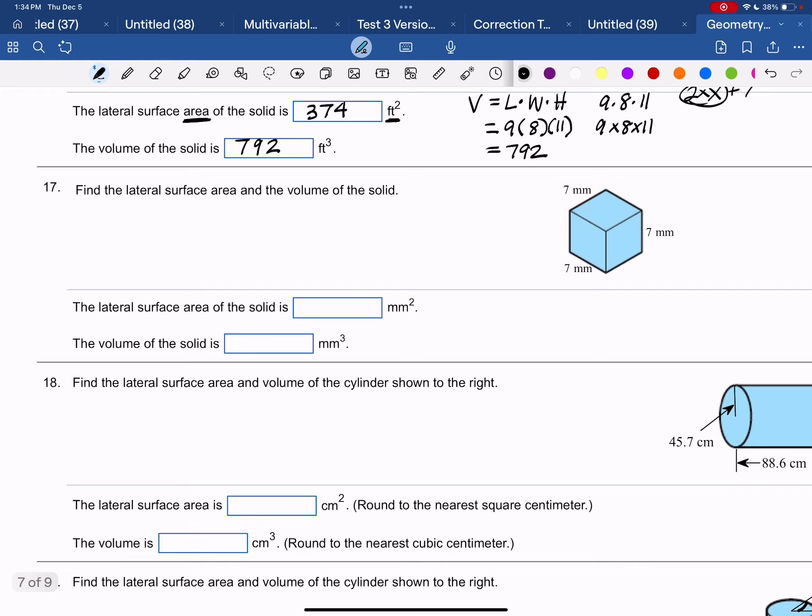Number 17, find the lateral surface area and the volume of the solid. So again, our lateral surface area of a rectangular solid is 2 times width times height plus 2 times length times height. And our volume is length times width times height.